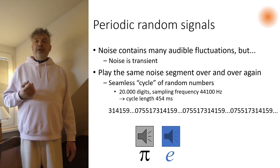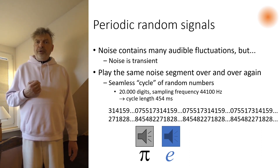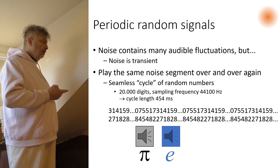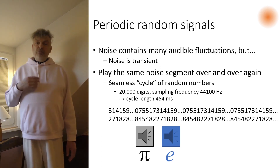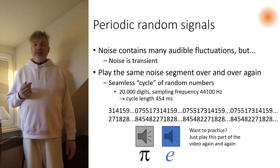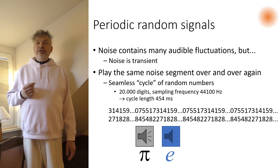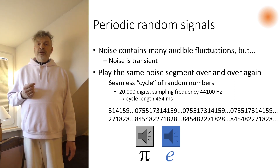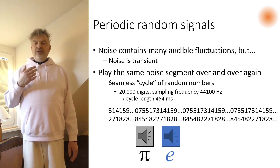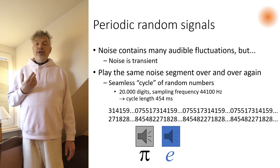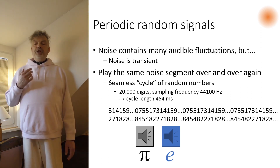Listen again to this periodically repeated piece of pi noise, and compare it to a periodically repeated piece of Euler noise. With some practice, you could learn to tell them apart. This is due to our auditory sensory memory, also called echoic memory. Just like a real echo gives you the chance to listen again to the sound sequence being echoed, echoic memory gives you a chance to focus on these very subtle variations.